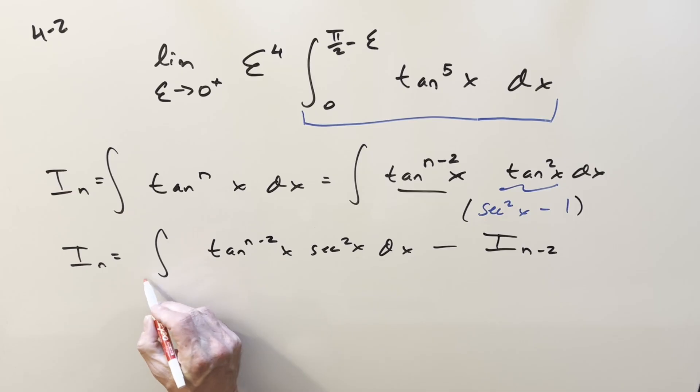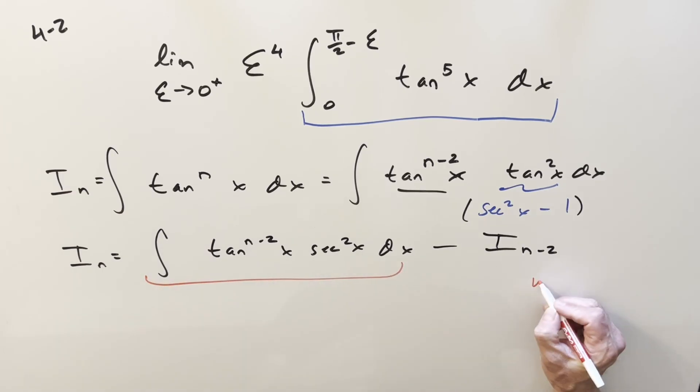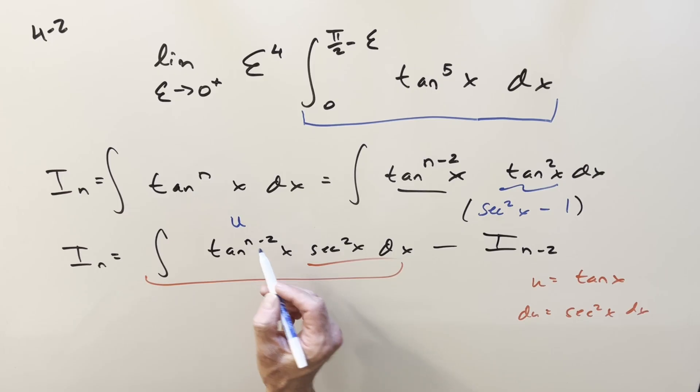Then next, we can focus on this integral right here with a u sub. Just again, u equals tan x. So then du is secant squared x dx, which we have right here. So let's actually just do it on the fly. I want to get back to the limit. I'm kind of impatient.